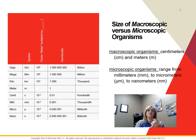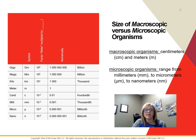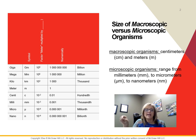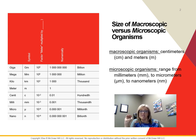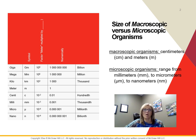Micro is one times ten to the negative six — you can see how small that number is, with five zeros after the decimal, then the one. Nano is ten to the negative nine, so you're going to have nine decimal places. These are very, very small, and it's kind of hard to wrap our brain around exactly how small some of these organisms are.